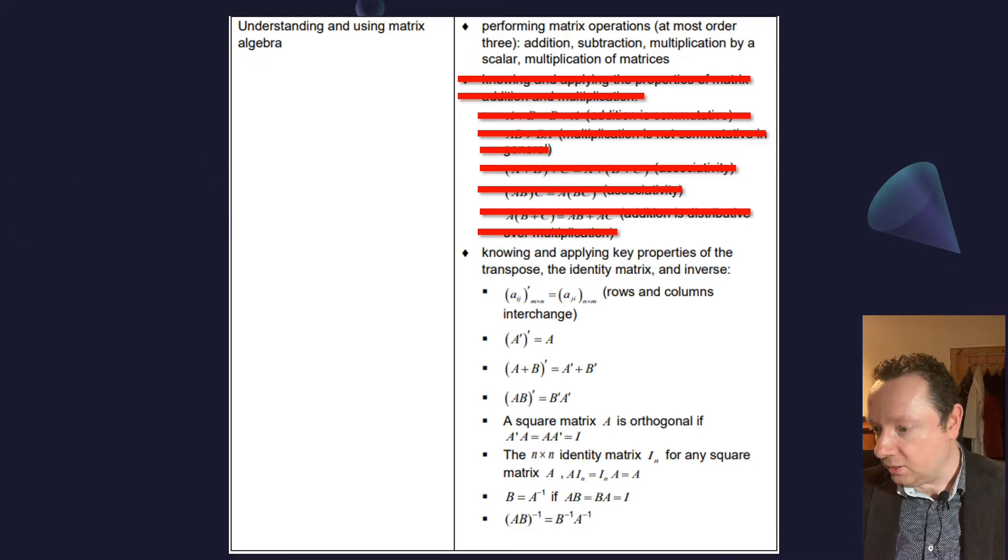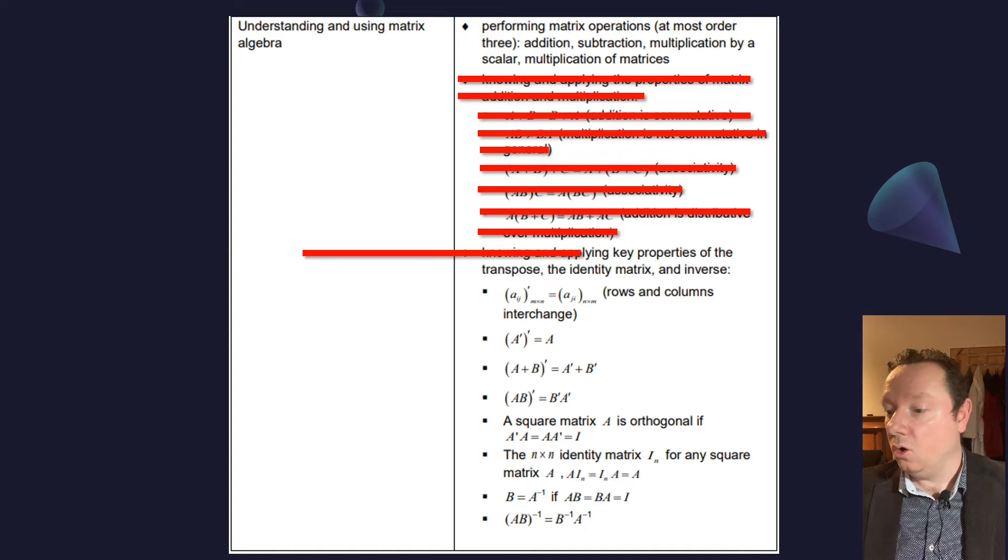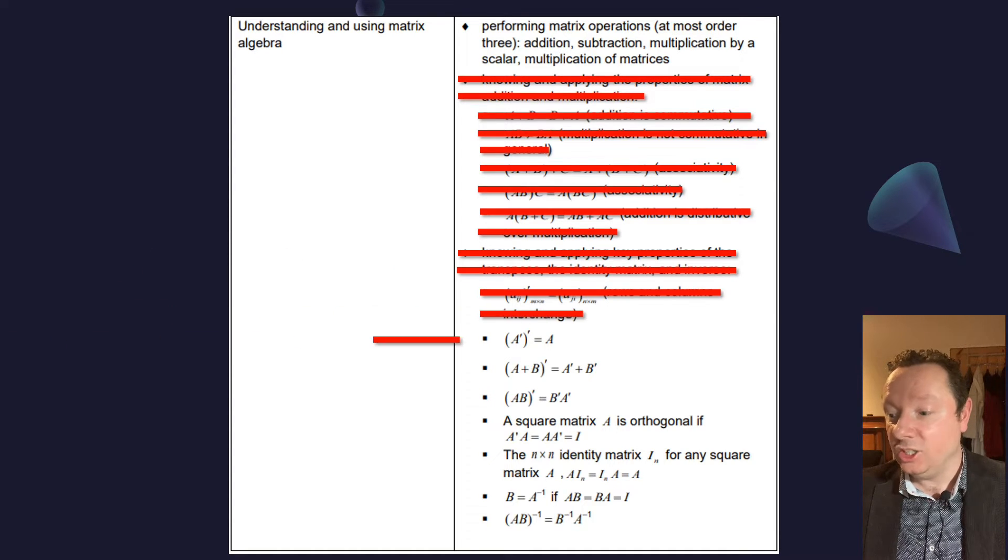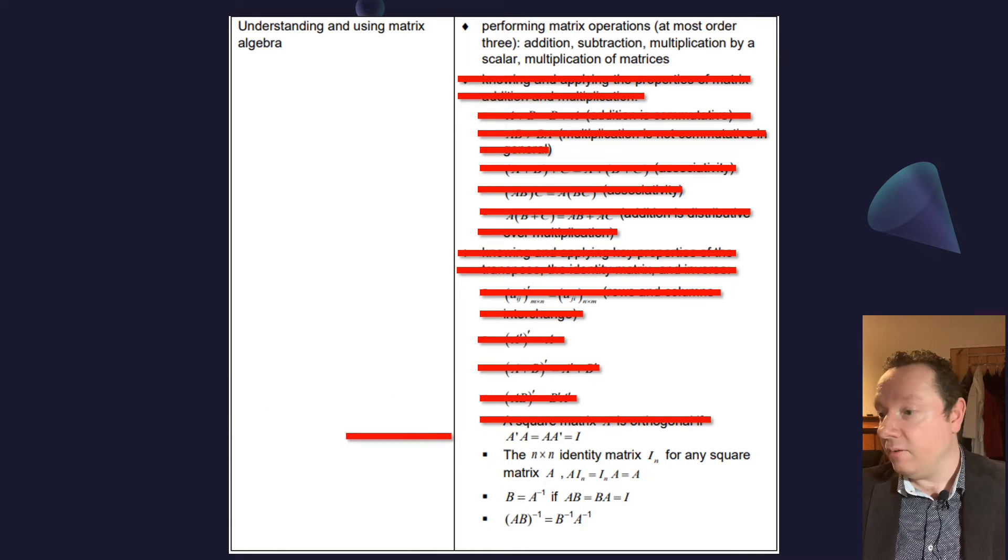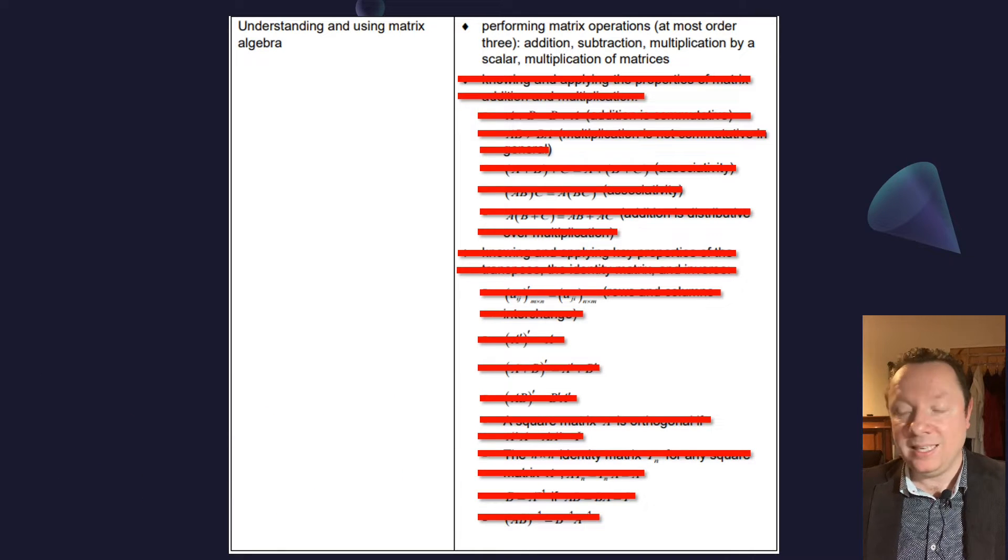Knowing and applying the key properties of the transpose, the identity matrix, the inverse, doing that algebraically with transpose, identity, all the little bullet points and the little things you would have to use are gone. So matrix algebra in general is gone, apart from simple addition and subtraction, multiplication by a scalar, and multiplication of matrices, which are usually done with the actual matrices themselves.